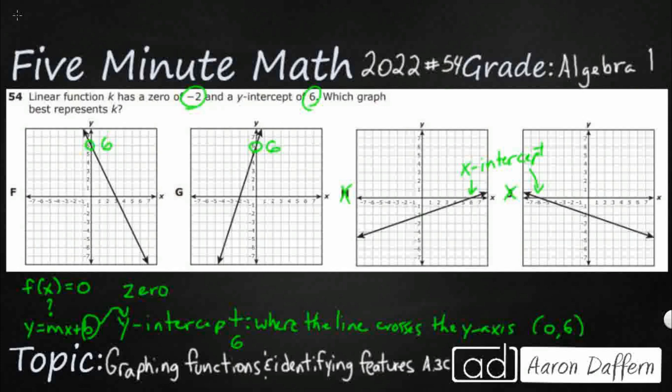Now your f of x is really just measuring your range, right? And then your x is going to be your domain because your x is your independent variable and your f of x is your dependent variable.